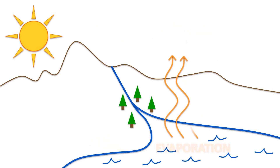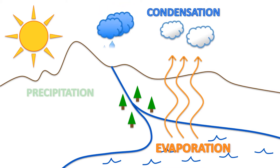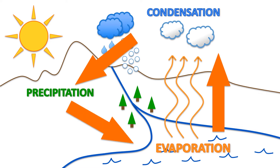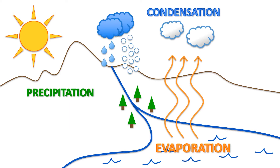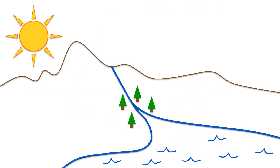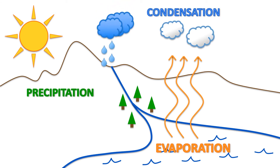Water travels in a cycle, yes it does. It goes up as evaporation, forms clouds as condensation, and comes down as precipitation, yes it does.